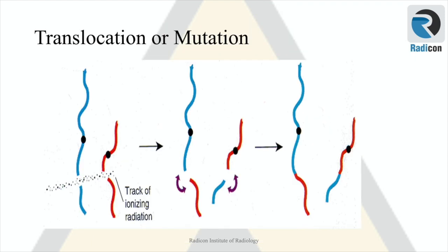This slide describes a possible pattern of DNA damage where two DNA strands are fragmented along the track of radiation. After the initial insult, repair begins and the red fragment is attached to the blue body and vice versa — this is abnormal. Translocation of DNA and genes can be associated with pathological expression such as tumor formation. This is one example of DNA mutation.